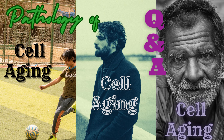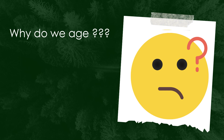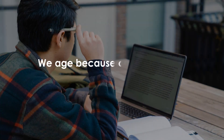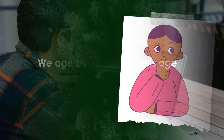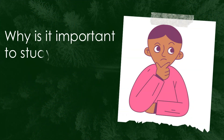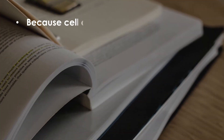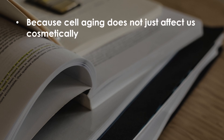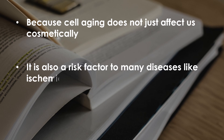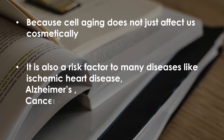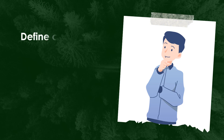Hi, welcome to Pathology Riddles. Today we are going to deal with the topic of pathology of cell aging in a question-answer format. The first question is: why do we age? We age because our cells are aging. Why is it important to study cell aging? Because cell aging does not just affect us cosmetically — it is also a risk factor for many diseases like ischemic heart disease, Alzheimer's, cancer, and many other chronic diseases. Define cell aging.